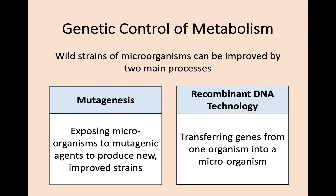There are a couple of different ways of trying to improve strains of microorganisms. The first is called mutagenesis, which involves exposing microorganisms to mutagenic agents — things like radiation and some chemicals. The other way is transferring genes from one organism into a microorganism, taking the gene that you want and inserting it into a microorganism, and this is called recombinant DNA technology.